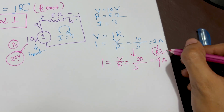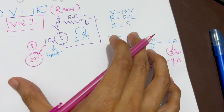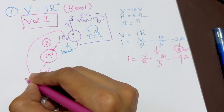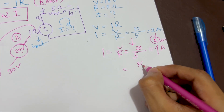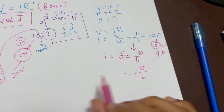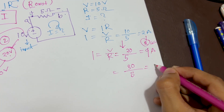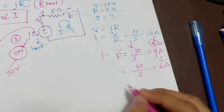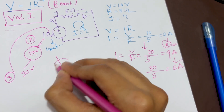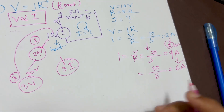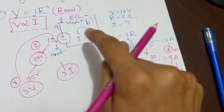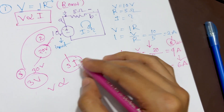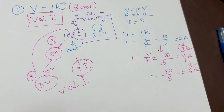Now increasing the voltage three times — from 10 to 30 volts — I equals 30 divided by 5, which is 6 amperes. From 2 amperes to 6 amperes is also a three-times increase. So a three-times increase in voltage gives a three-times increase in current, proving that V is proportional to I when R is constant.